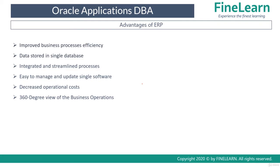This actually improves the business process efficiency, and the data is stored in a single database. Since they are all integrated, the process is always streamlined and it is easy to manage and update a single software, so operational costs are hence reduced. And also you'll have a 360-degree view of your business operations, which means a CEO, CXO, or any executive team member can have a 360-degree view of the entire business operations at one single time because you are using one software to manage everything.